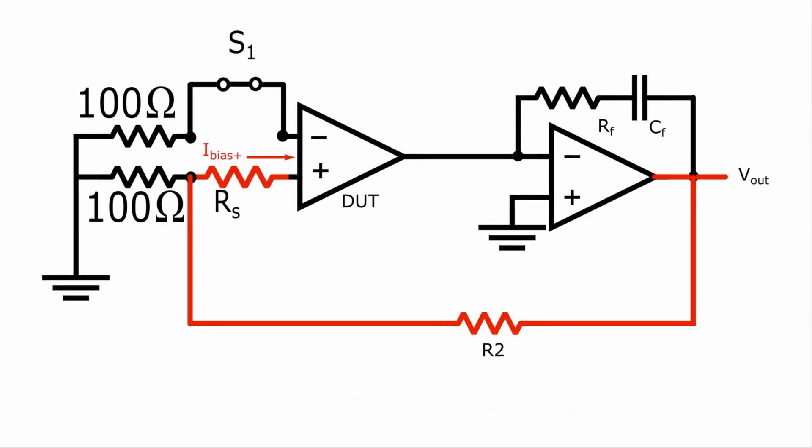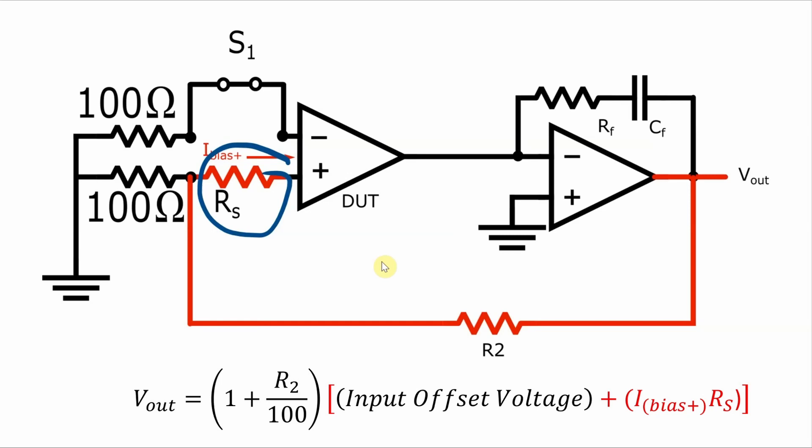Next, you can open up S2 and keep S1 closed. Now the input bias current will flow through this RS, which needs to be set to something much bigger than 100 ohms, like at least 100 kiloohms or so, and that will create a voltage across RS and will introduce a DC error at the non-inverting terminal, which can then be measured at the output. So that voltage measurement at the output will be the voltage from the input offset voltage that you've already measured, plus a voltage that is due to the bias current flowing through RS and into the non-inverting terminal. Then with some algebra, you can work out what the non-inverting terminal bias current is.